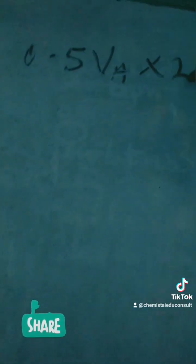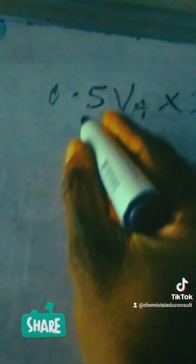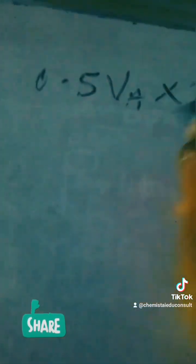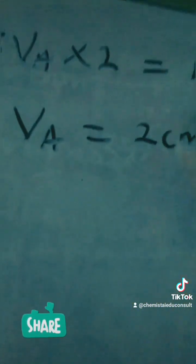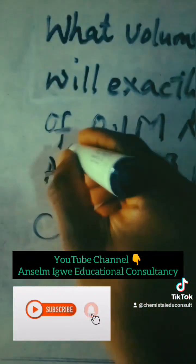0.5VA times 2 equals 1 times 2. 0.5VA times 2 is the same thing as VA. 1 times 2: VA equals 2 cm³. So you can see that the answer is there, answer A.